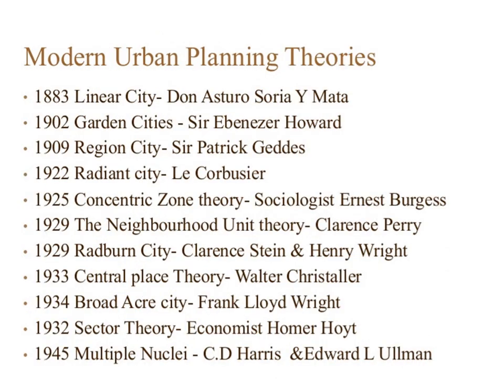Modern urban theories were put forth by different eminent personalities since 1883 to 1945. They were: linear city, garden cities, region city, radiant city, concentric zone theory, the neighborhood unit theory, Radburn city, central place theory, broad-acre city, sector theory, and multiple nuclei theory.